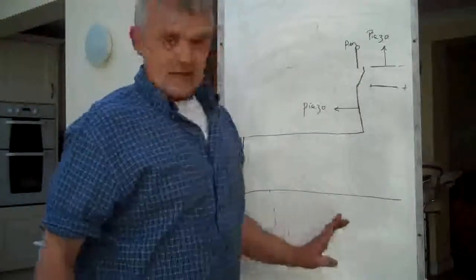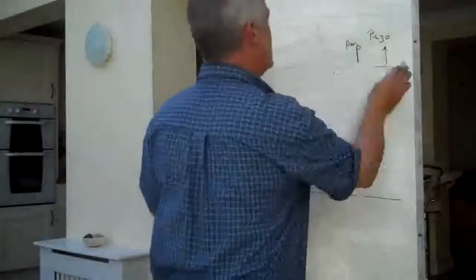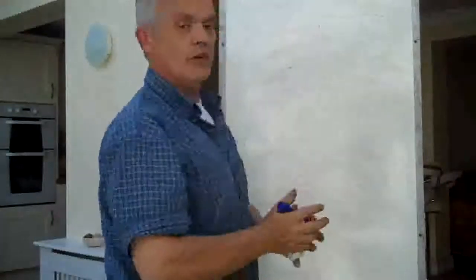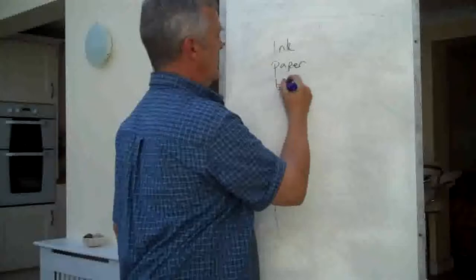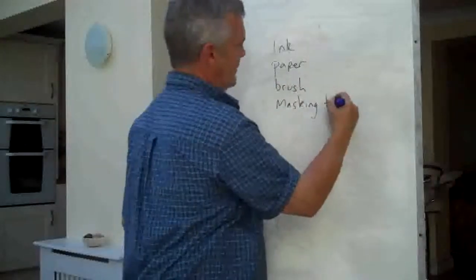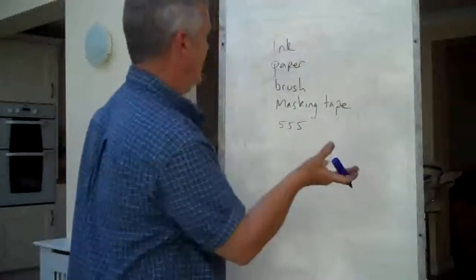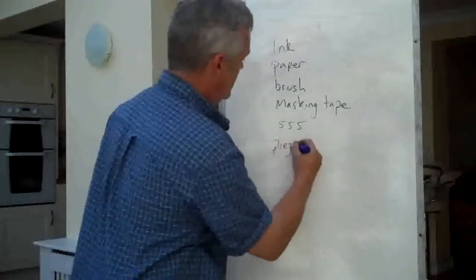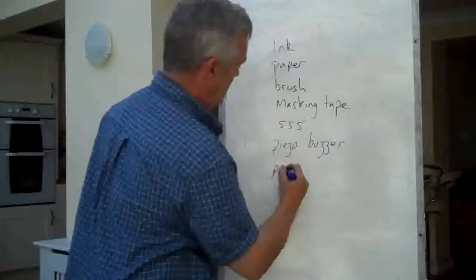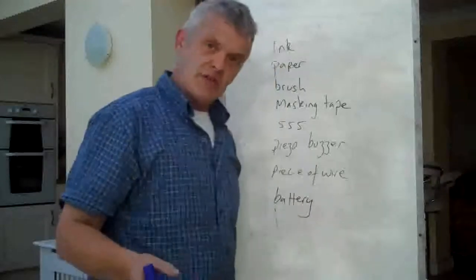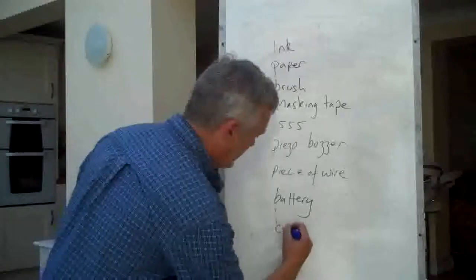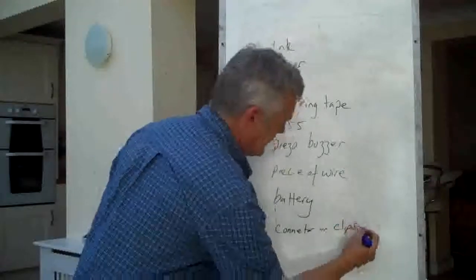That's the basics of the circuit. So the things that we're going to need in order to make this: Here's a bit of card, some ink, your 555, paper, brush, masking tape, a 555 either CMOS or standard, a piezo buzzer, a piece of wire, battery. You can either connect the battery using a battery connector or two crocodile clips. Either a connector or clips, and that's what we're going to need.